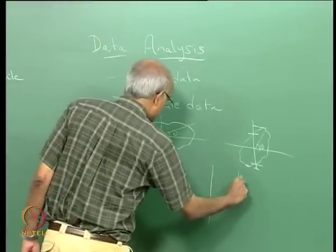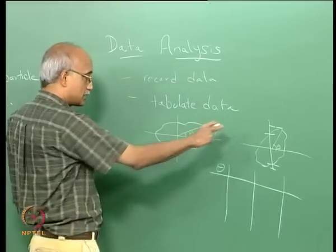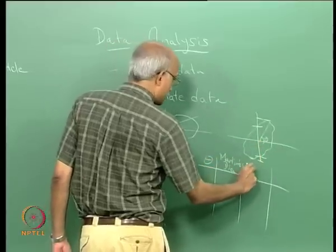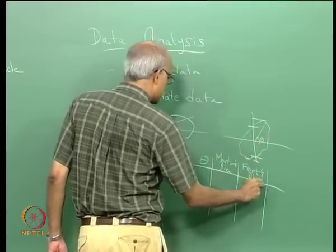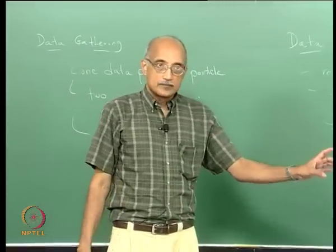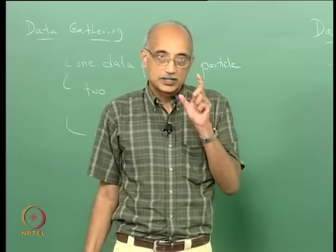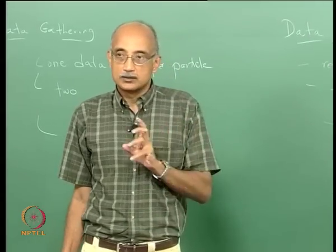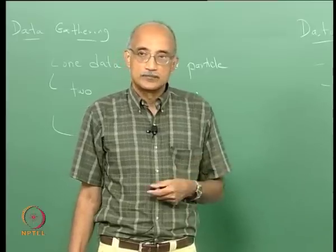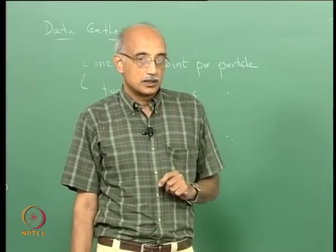You can take a ratio of Martin's diameter to Ferret's diameter and represent that as a shape index. If the particle is perfectly spherical, this ratio will always equal 1, whereas for a highly elongated particle, the ratio would tend toward 0. So simply by taking the ratio of Martin's diameter to Ferret's diameter, you can represent it as a shape coefficient for the particle. This is a more rigorous approach in terms of capturing and analyzing the data.